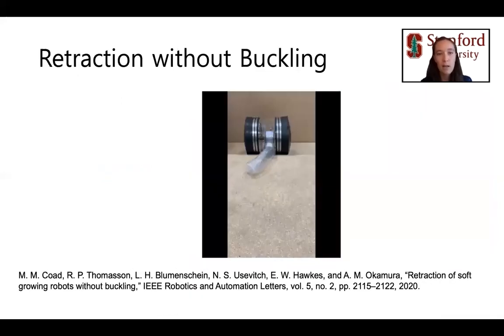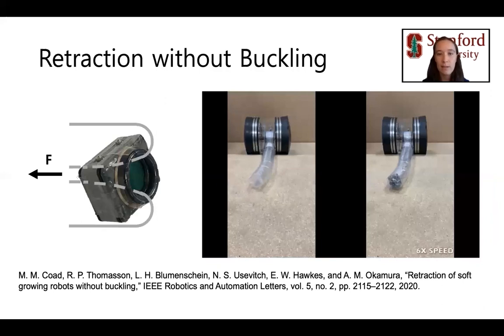A problem faced by soft growing robots and not addressed in any of the previous tip mount designs is that during retraction from the base, the robot body tends to buckle unwontedly. Our previous work analyzed this problem and designed a retraction device that pulls on the tail material from the robot tip, preventing unwanted buckling. Because both retraction devices and tip mounts must sit at the robot tip, it makes sense to combine them for applications like object retrieval where both are needed.